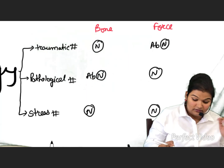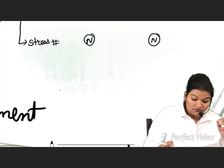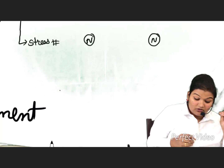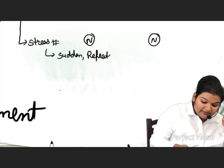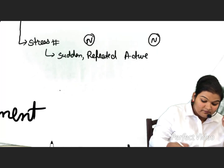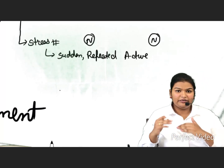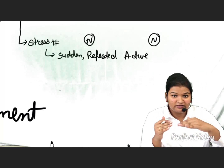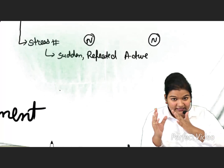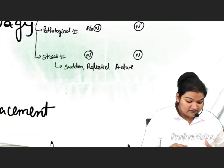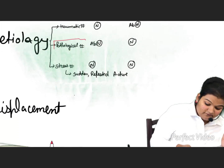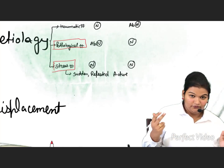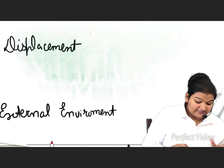In stress fracture, both bone and force are normal, but the cause of the fracture is sudden repeated frequent activity by the individual. This sudden repeated activity causes the stress fracture. We will see pathological fracture and stress fracture in detail in further videos. Now let us see displacement fracture.